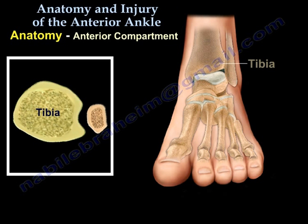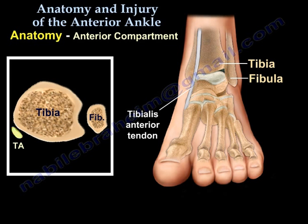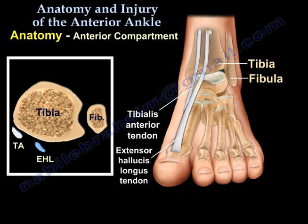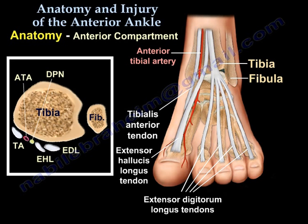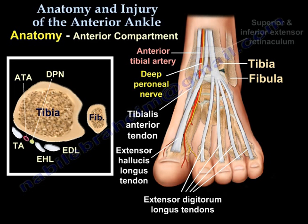Anatomy of the anterior compartment includes the tibia and the fibula. It also includes the tibialis anterior tendon, the extensor hallucis longus tendon, and the extensor digitorum longus tendons. Here you can see the anterior tibial artery and the deep peroneal nerve. And finally, the superior and inferior extensor retinaculum.